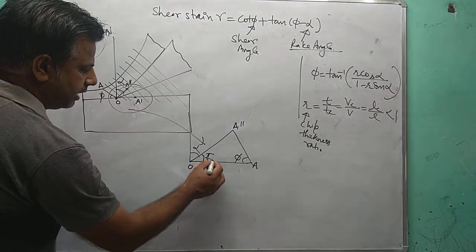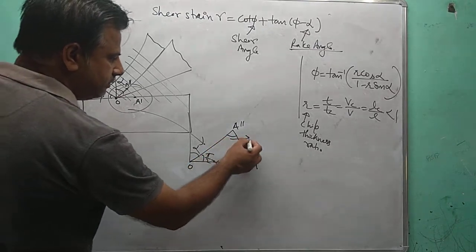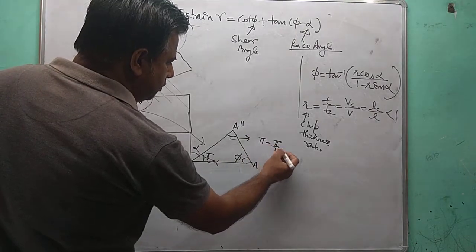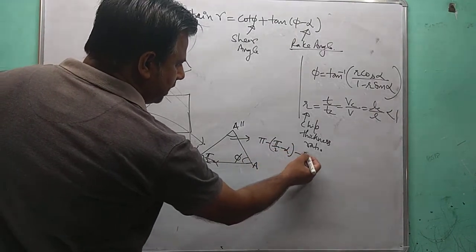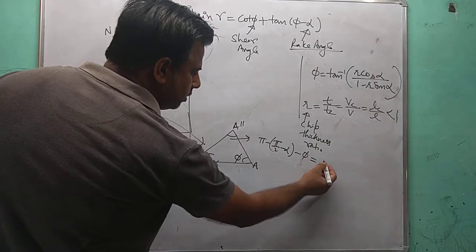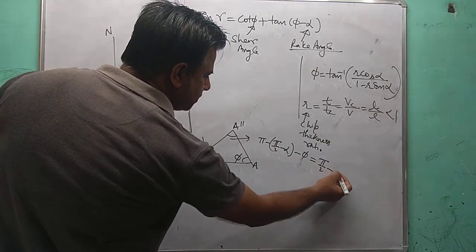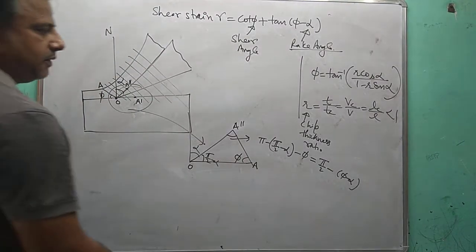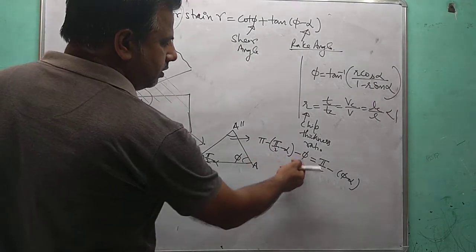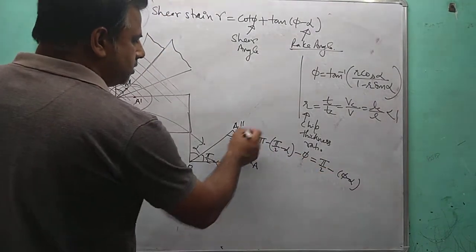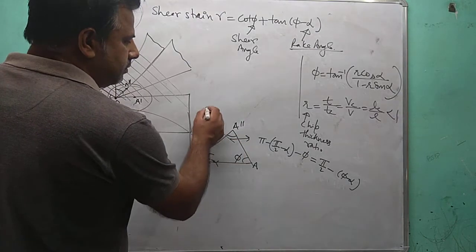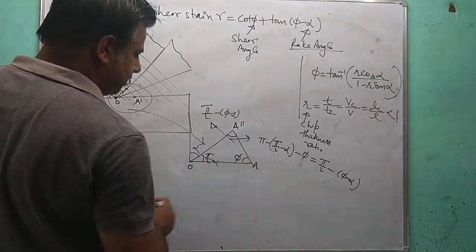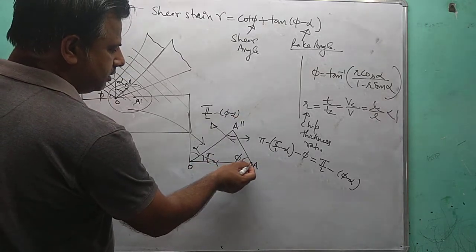This one is the rake angle alpha, and this angle will be 90 minus alpha. So this angle will be pi/2 minus alpha minus phi, which equals pi/2 minus (phi minus alpha). So this angle is pi/2 minus phi minus alpha.